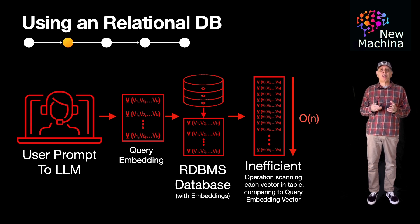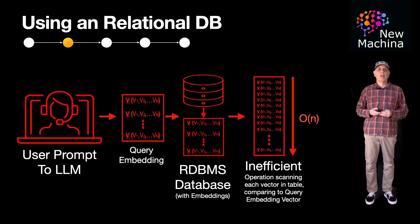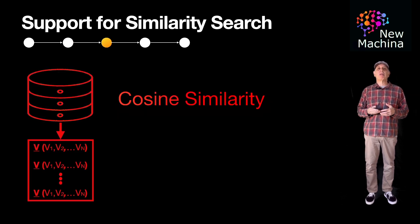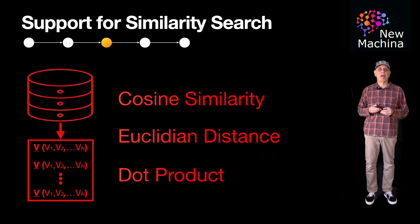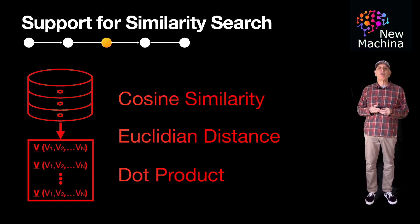So what features does a vector database have that make it ideal for ML and LLM-driven systems? The first is native support for similarity search. Common algorithms supported are cosine similarity, Euclidean distance, and dot product. These are also known as distance metrics when configuring your vector database. Typically when you create your table, you define the distance metric you want to use for all your queries.